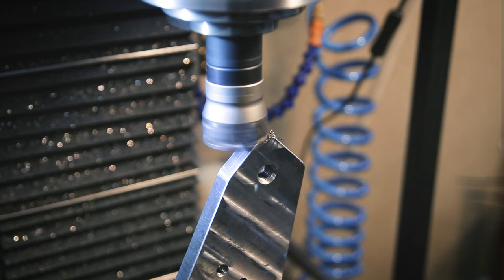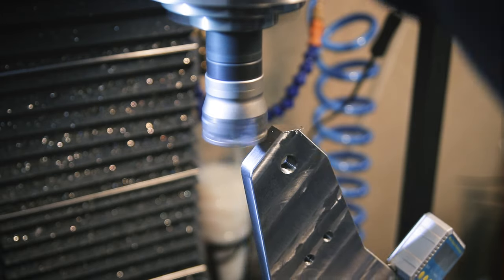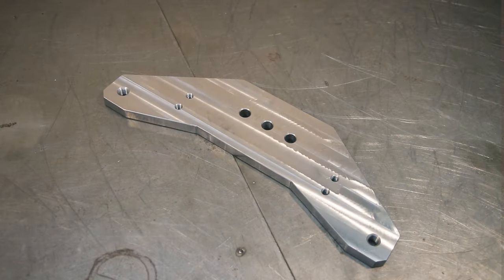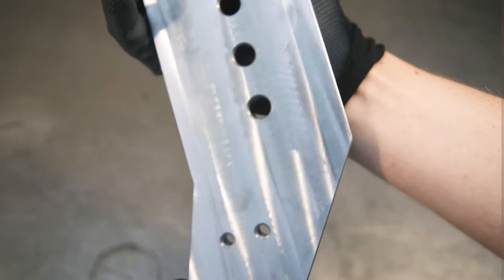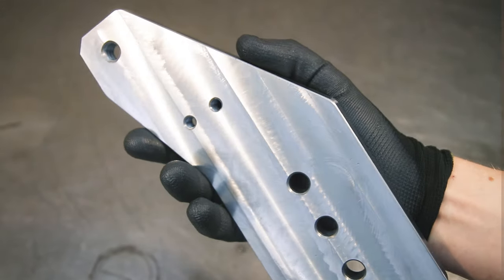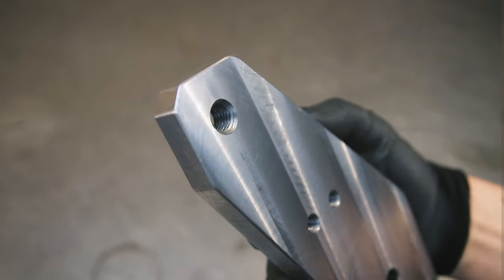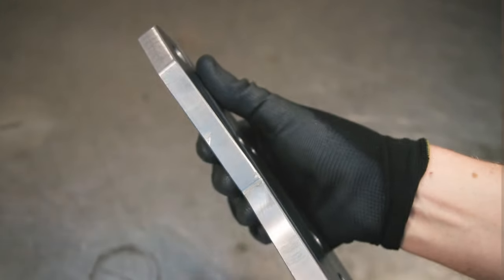I also did another facing pass on one side with this fly cutter to improve the finish somewhat and chamfered some of the edges. Here's the almost finished part because there's one feature missing—the curved slot for clamping. I actually added that later. You'll see that in the last video.